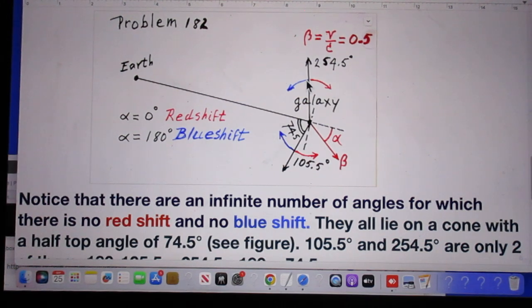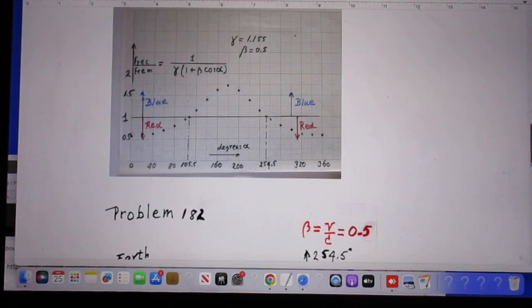If the angle is larger than 254 degrees, it's blueshift. If the angle is larger than 105 degrees, there is redshift. If the angle is smaller than 105 degrees or smaller than 254.5 degrees, there is no redshift. And you see that here in the same way.